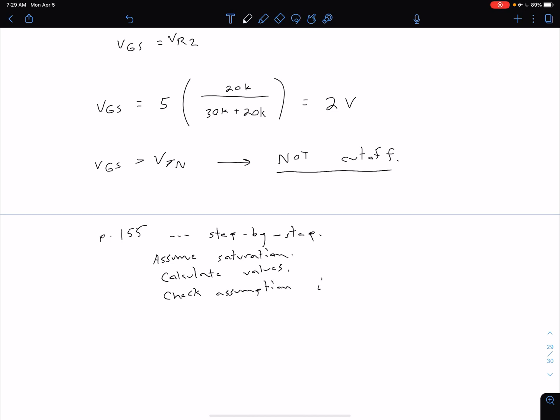And so if we see our drain current is less than zero, then we're probably going to be operating in the cutoff region. And if we see that our VDS is less than our VDS sat, then we're probably going to be operating in the non-saturation region. Similar sort of approach that we had with our BJTs. So in this case, let's start by assuming we're in saturation.